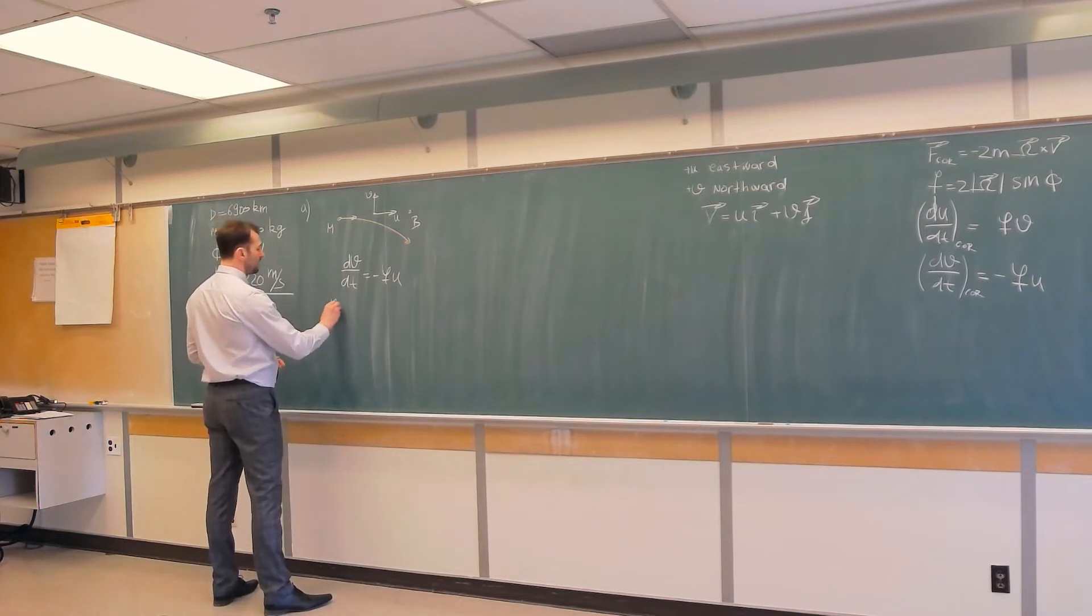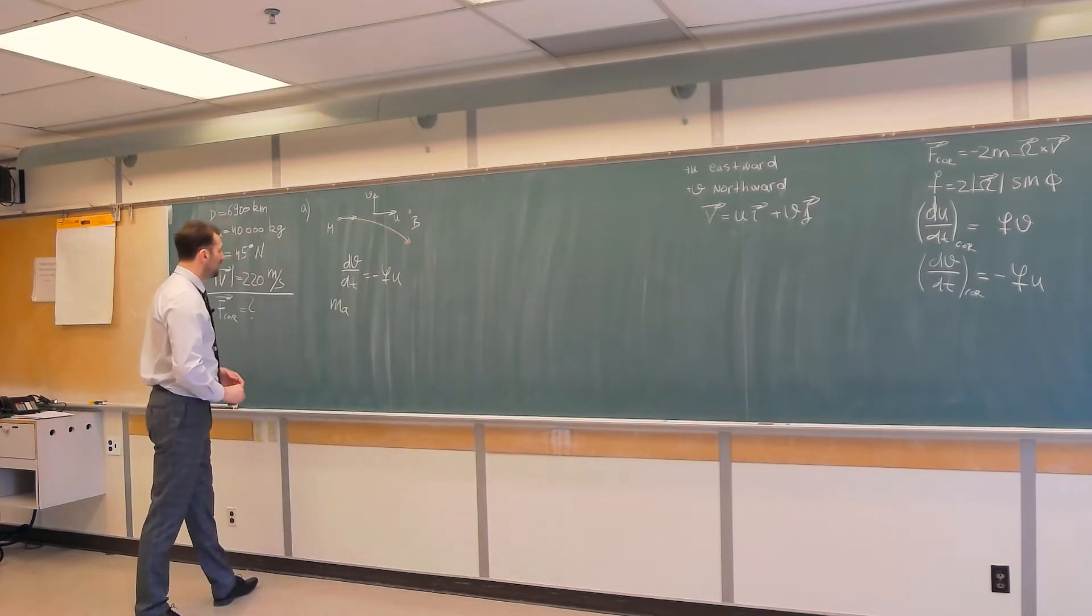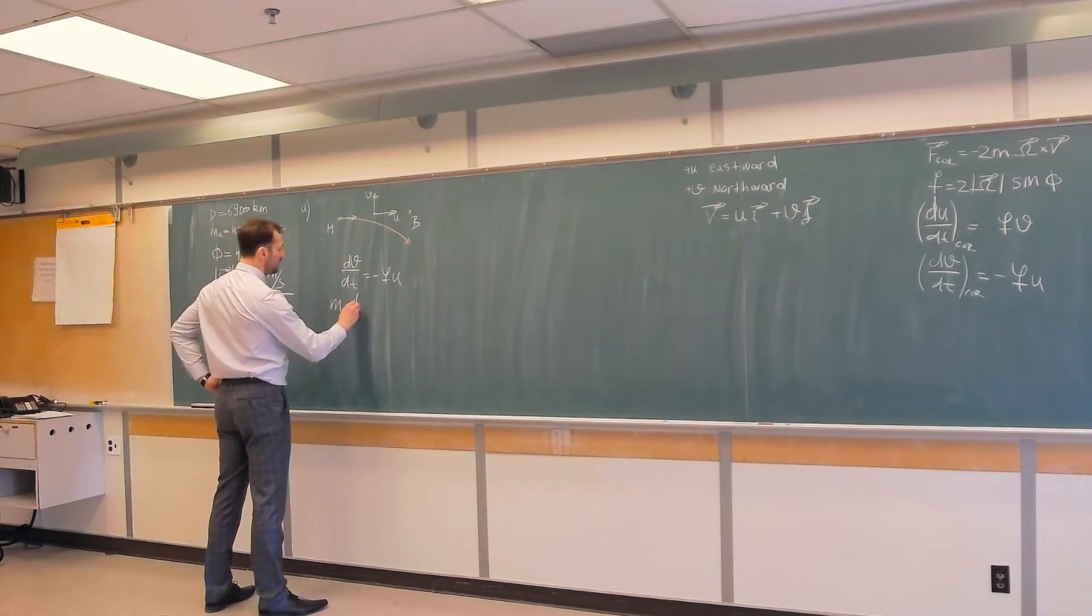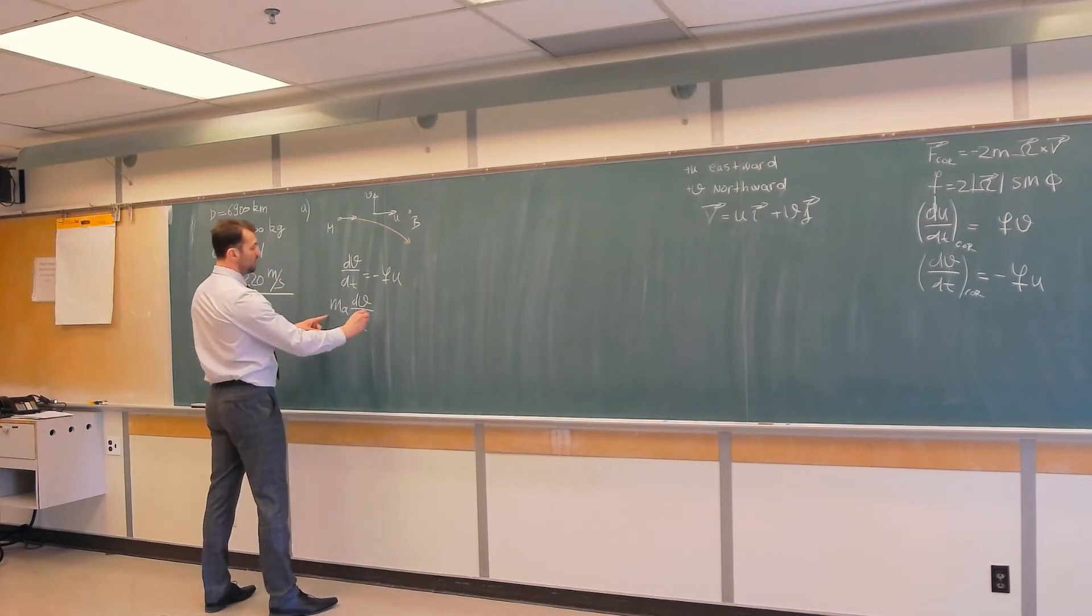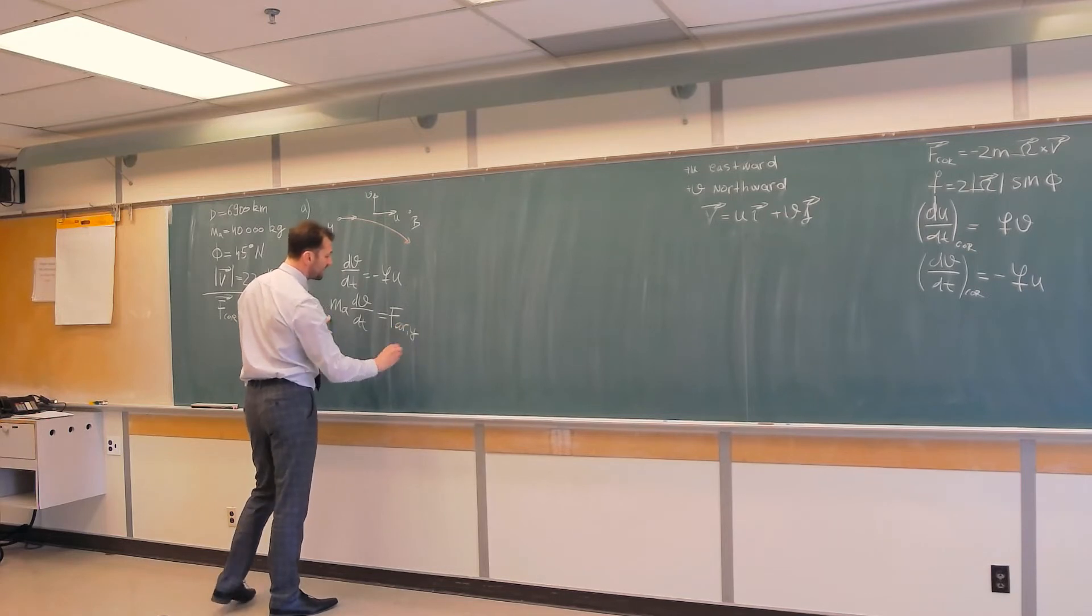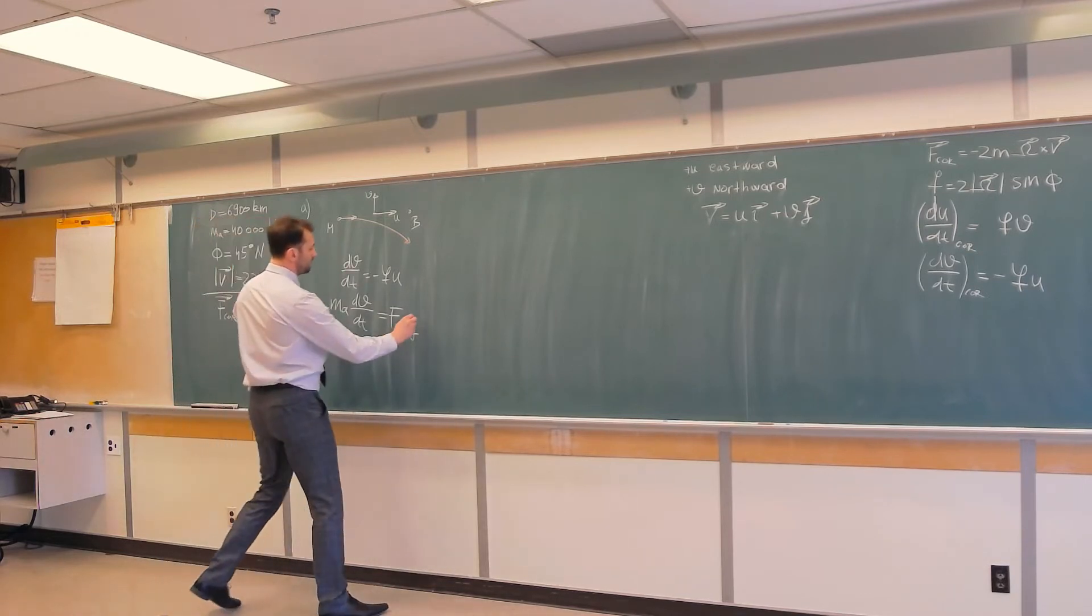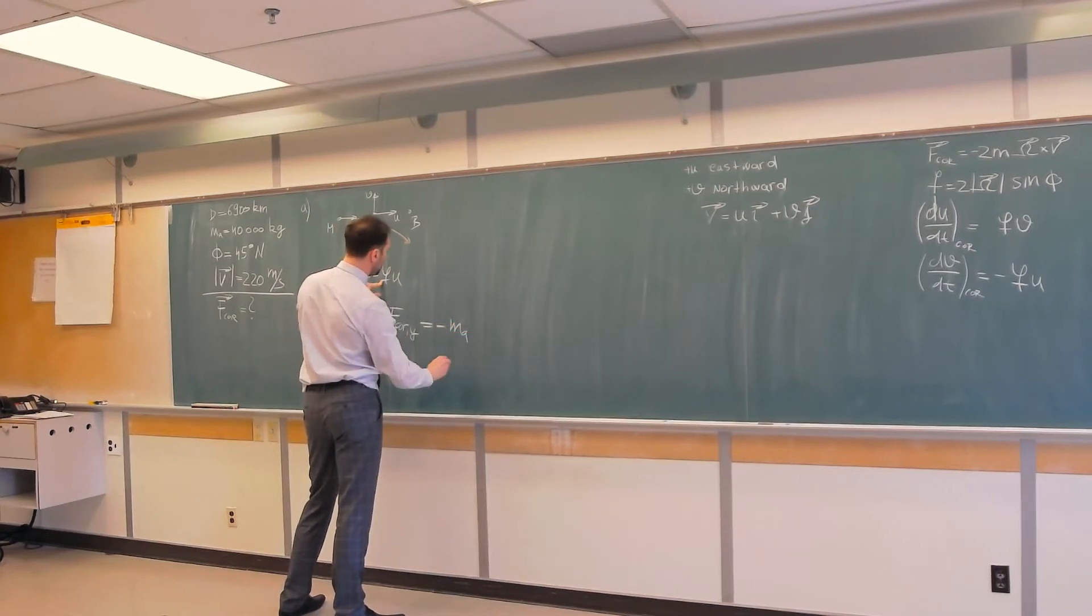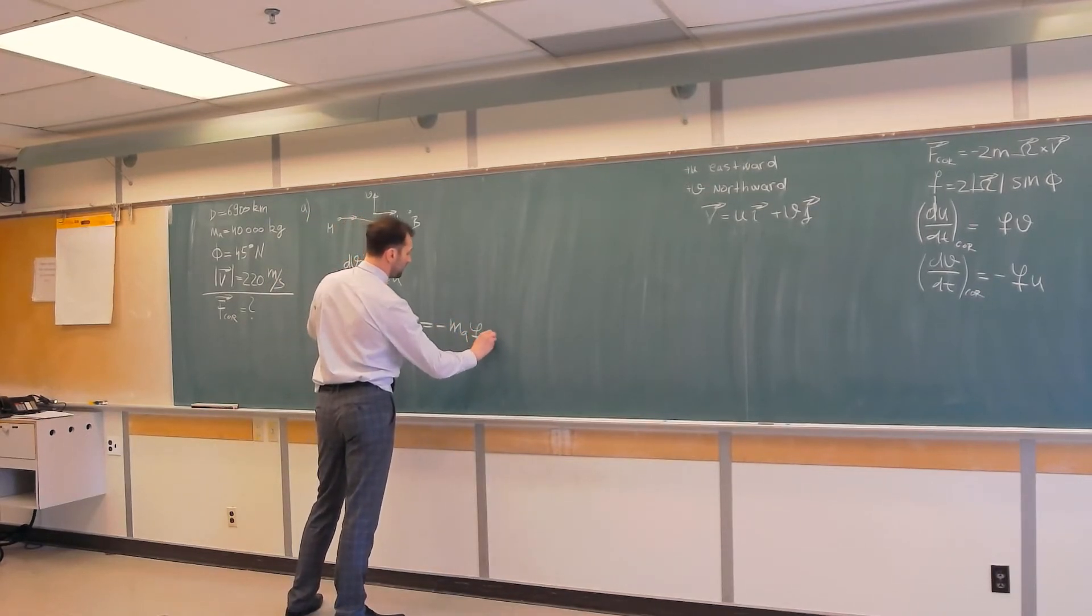We are interested in the force. So to get the force, we multiply both sides by the mass. So m dv/dt, and now this is Coriolis force in the y direction, is equal to negative mass of the aircraft times f times u.